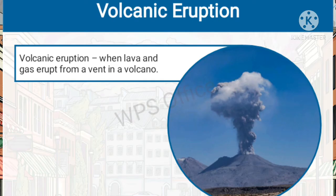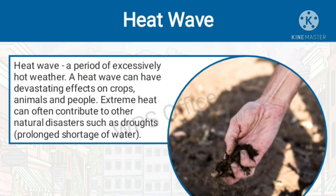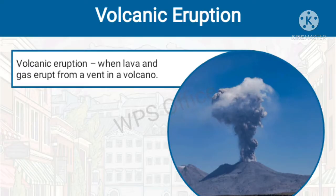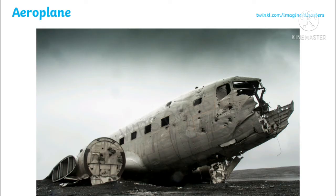Now you have another natural disaster which is volcanic eruption. A volcanic eruption is when lava and gas erupt from a vent in a volcano. It's almost like an earthquake but a bit different because it has its own form. Now you have heat wave — a period of excessively hot weather. Most often you experience such things in the desert regions. This is the image of a volcanic eruption.